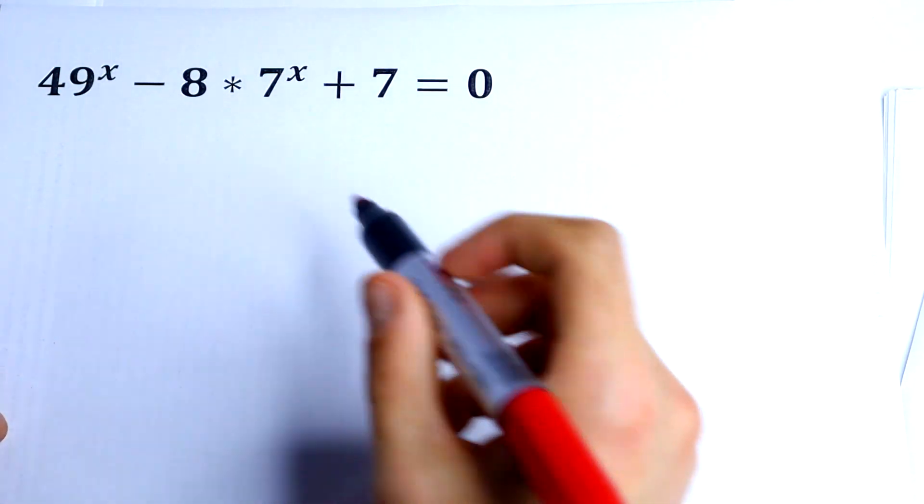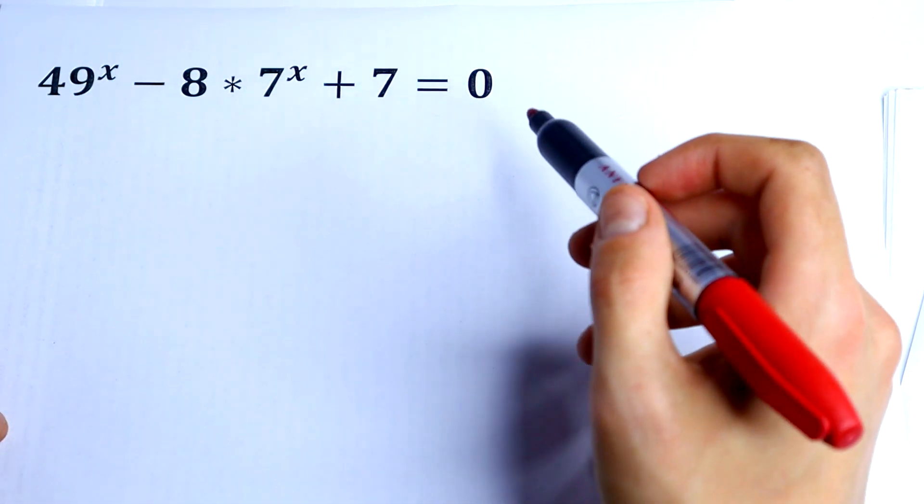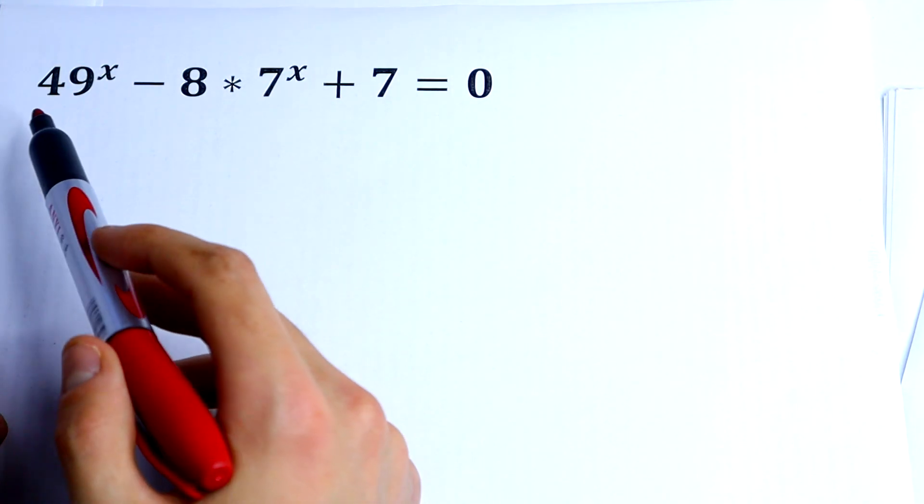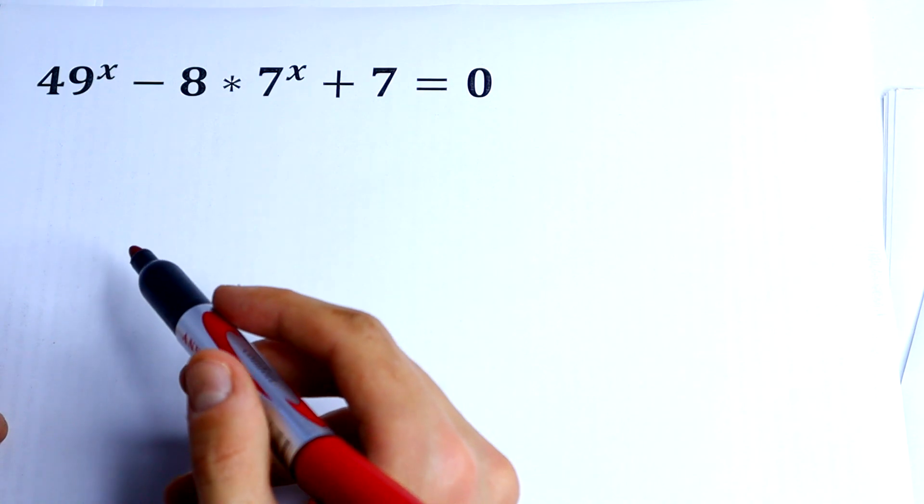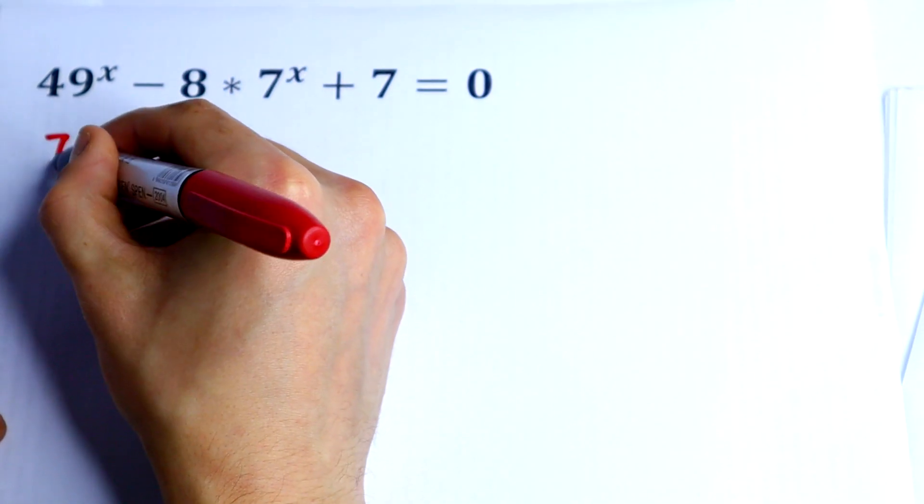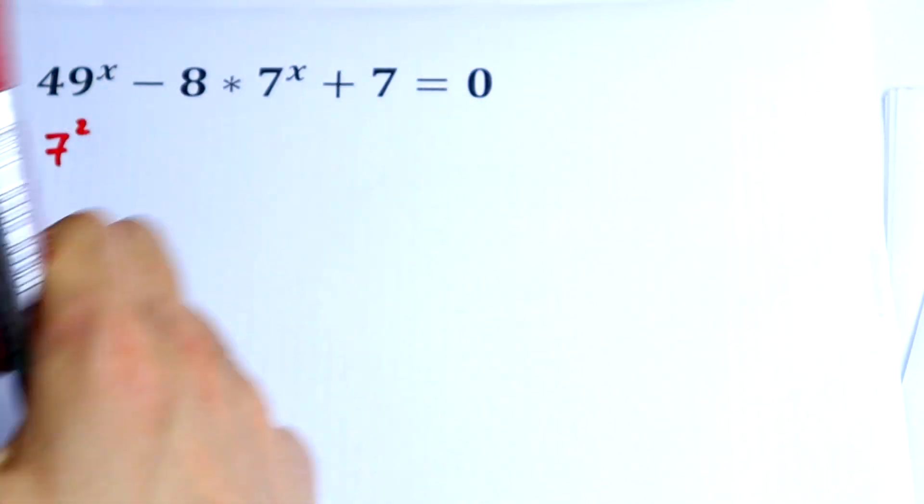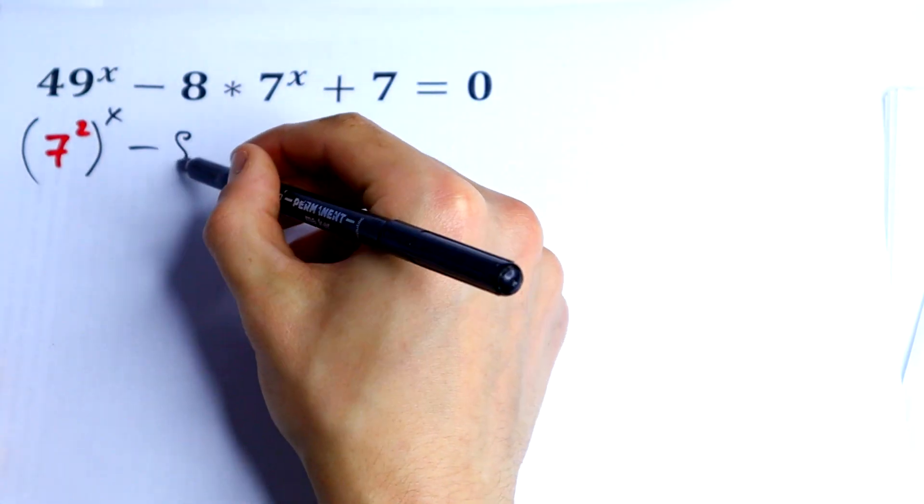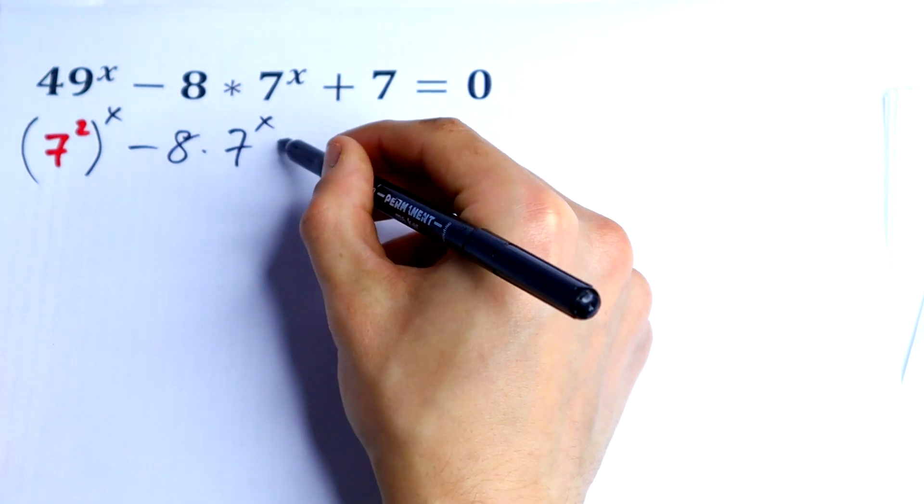So how can we solve this? First of all, I see that this 49 I can represent as 7 squared. So let's do this: 7 squared to the power x, and this I'll leave right like that.